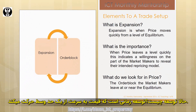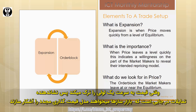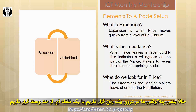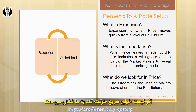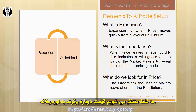Expansion is when price moves quickly from a level of equilibrium, and it couples directly with the tool of an order block. When price leaves a level quickly, this indicates a willingness on the part of the market makers to reveal their intended repricing model. If price moves up quickly from a consolidation or equilibrium, that gives us an indication to look for a bullish order block — we don't want to chase price, we wait for it to come back down into the order block.